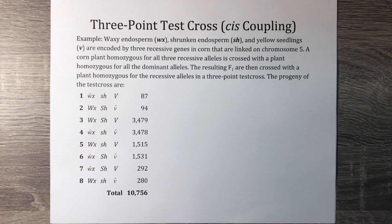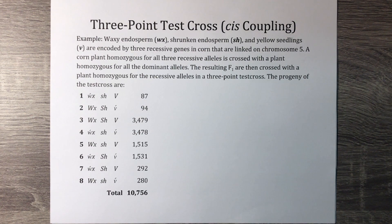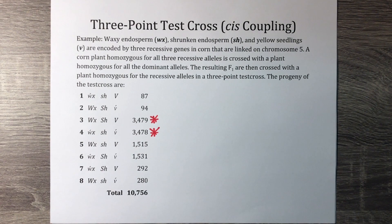Now we'll go over a three-point cross example involving cis coupling. Waxy endosperm, shrunken endosperm, and yellow seedlings are encoded by three recessive genes in corn that are linked on chromosome 5. A corn plant homozygous for all three recessive alleles is crossed with a plant homozygous for all the dominant alleles. The resulting F1 are then crossed with a plant homozygous for the recessive alleles in a three-point test cross. The progeny are shown below, and progeny 3 and 4 are the non-recombinants because they are greater in number than the other progeny.